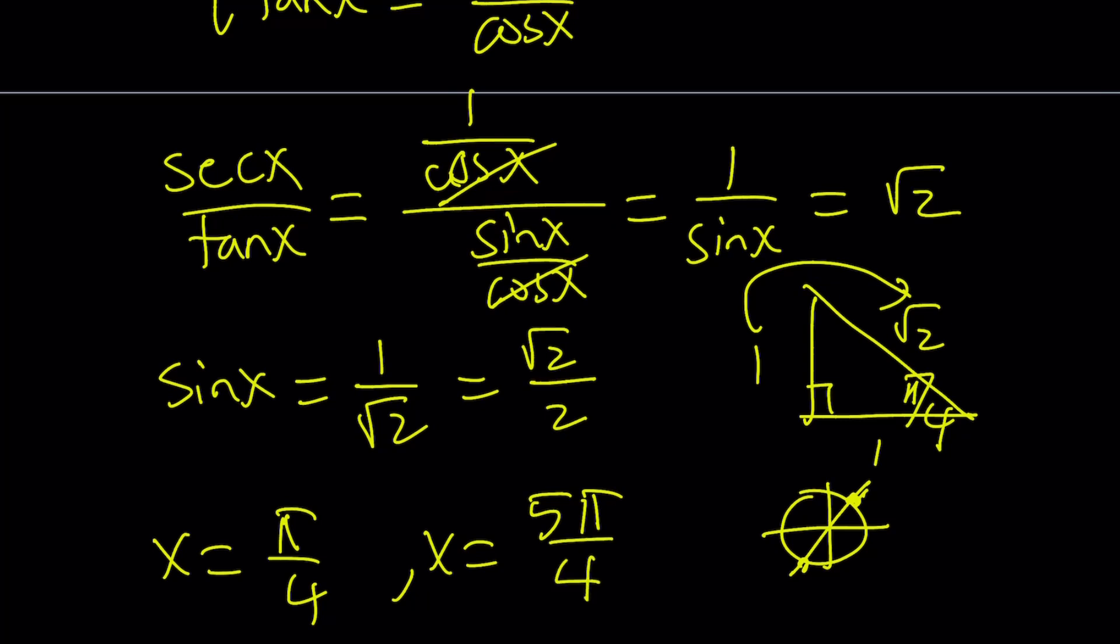So 5 pi over 4 is going to be another solution. If you add another pi to it, you're going to get 9 pi over 4. And that is going to be greater than 2 pi. So it's just going to repeat. So if you're looking for solutions between 0 and 2 pi, those are the solutions. Otherwise, you can keep going.